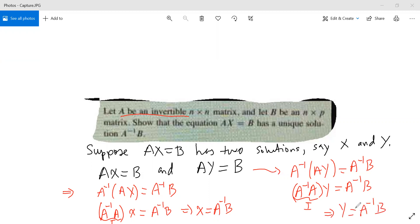As you can see, in both cases X and Y are equal to the same matrix. Therefore, we conclude that X equals Y, and they're both equal to A inverse B. This proves that the solution must be unique because we started with two solutions but showed that both solutions are equal to each other.